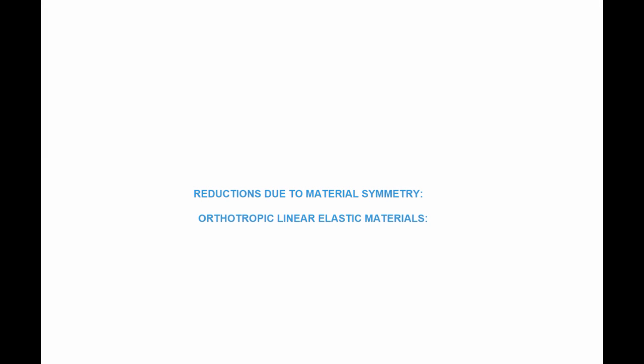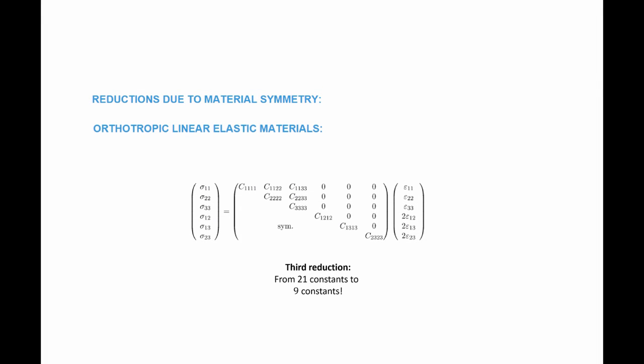We are now going to try to reduce those constants by considering specific types of linear elastic materials. The first type is the orthotropic linear elastic material. For orthotropic materials, because the response is symmetric around specific planes, the stress sigma_11 is not going to be related to the shear strains. So there are many zeros in the matrix, and instead of needing 21 constants, I only need 9 constants.